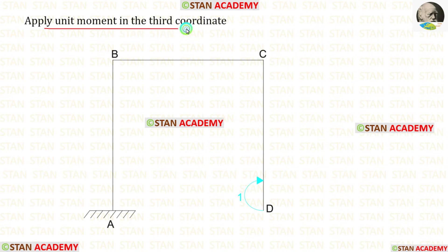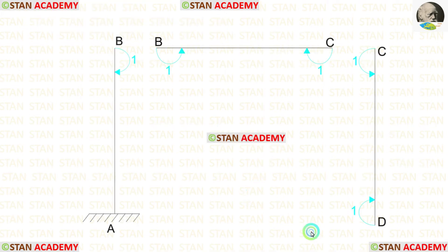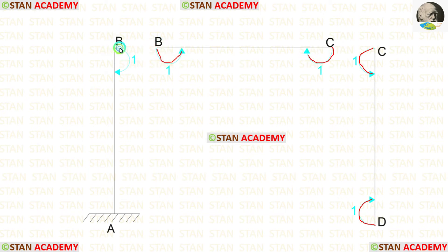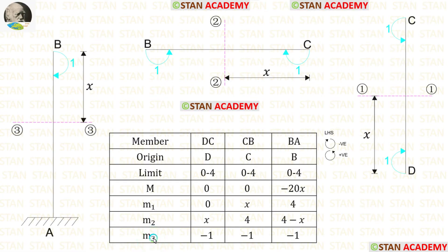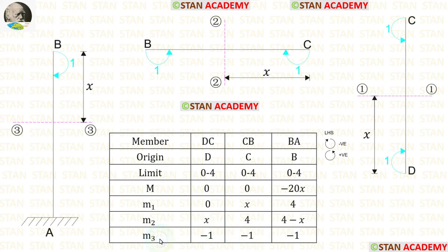Now let us apply the unit moment in the third coordinate. Before finding the moments, let us make the free body diagram. At point D, we have applied the unit moment in the clockwise direction. For DC, the moment acts in the clockwise direction, so it will be negative: M3 = −1. For CB, the moment also acts in the clockwise direction, so M3 = −1. For BA, the unit moment also acts in the clockwise direction, so M3 = −1.